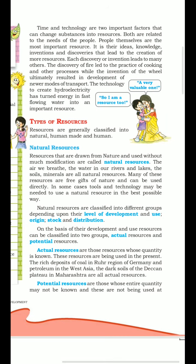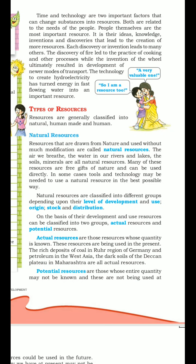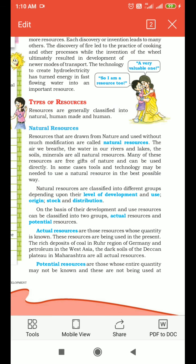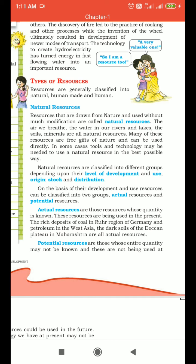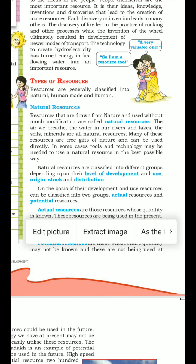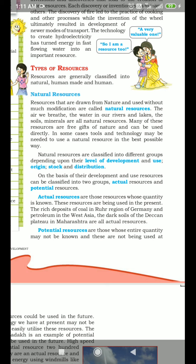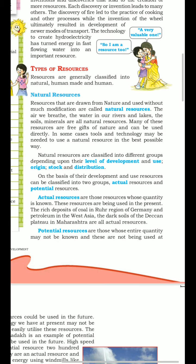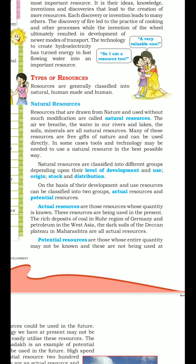On the basis of development and use, natural resources can be classified into two groups: actual resources and potential resources. Actual resources are those resources whose quantity is known and used in the present. For example, the rich deposits of coal in the Ruhr region of Germany and petroleum in West Asia.